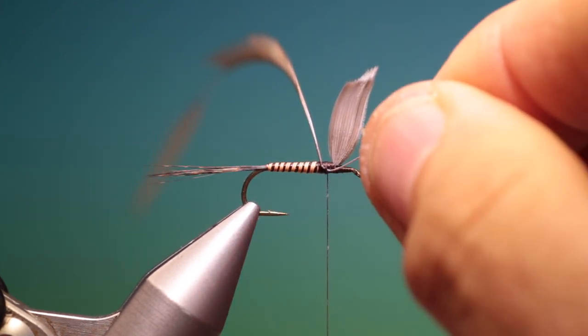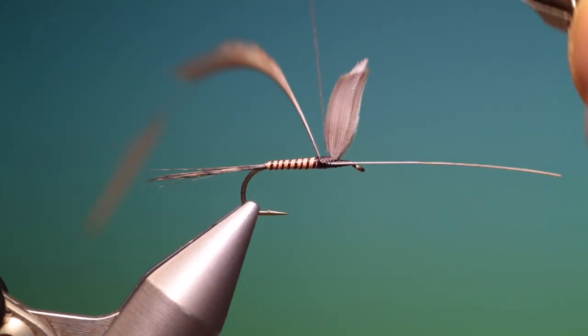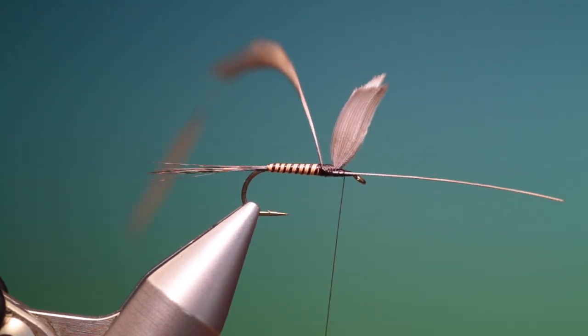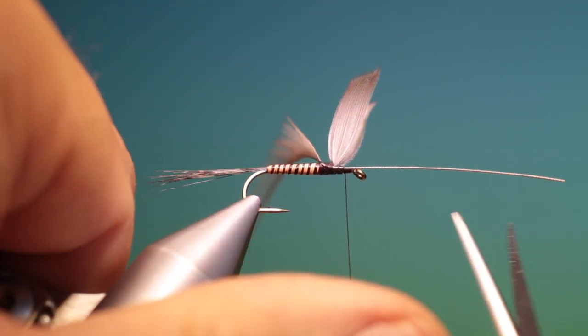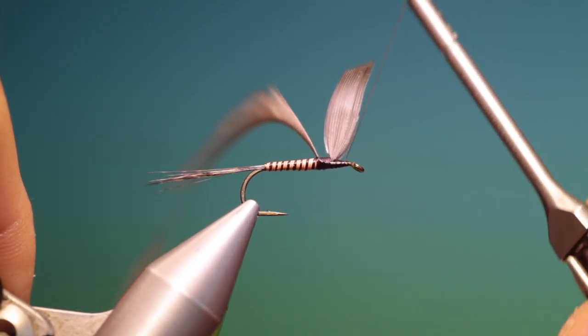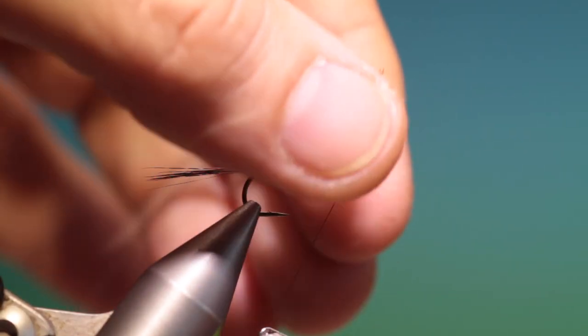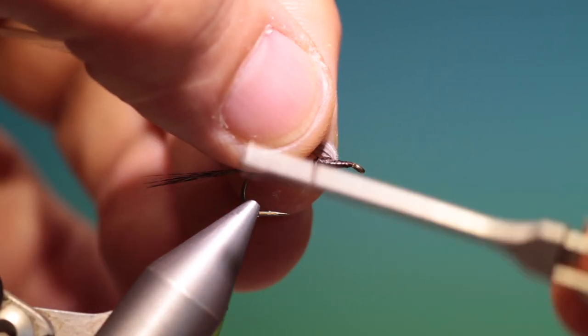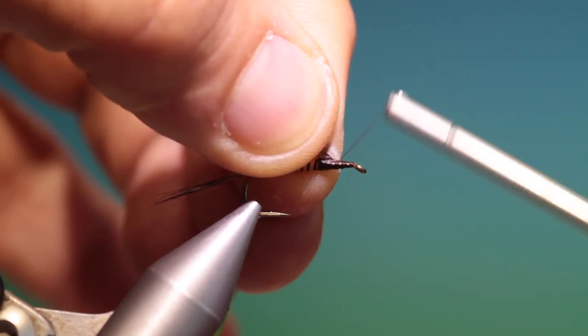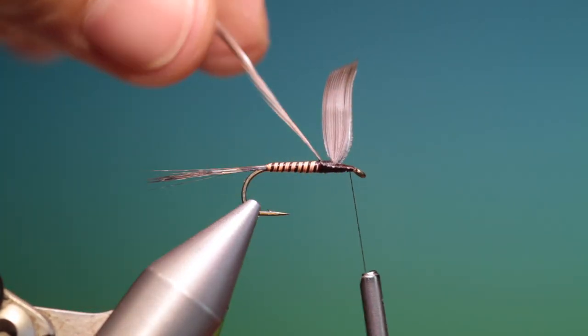Take it up. We want to keep this even so we get a nice hackle wrap. Go in front. Then I can take my scissors. Trim that off there. Pull the wings back again. Just go over that. So it's not the slippery hackle stem that the hackle is going to wrap around. We've got the tying thread. That's good.